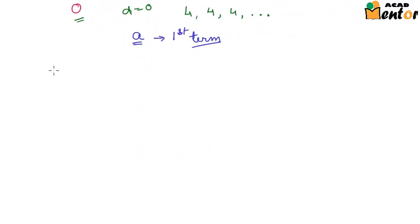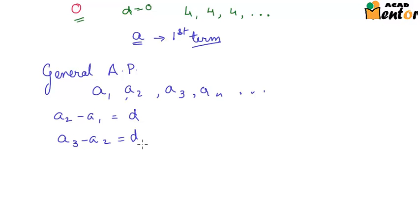Now let us have a look at the general form of any AP. Now let us say that A1, A2, A3, A4 and so on are a part of any AP or arithmetic progression. Now by definition, we know that A2 minus A1 is equal to the common difference d. Also, A3 minus A2 would be equal to d, because the difference between any two consecutive terms is constant for an AP. Similarly, A4 minus A3 would be equal to d and so on.